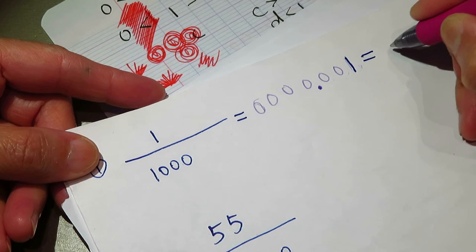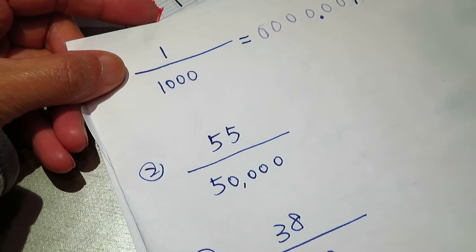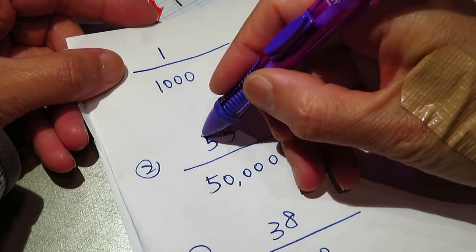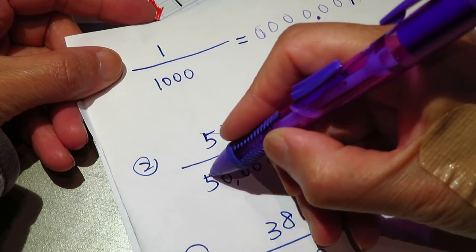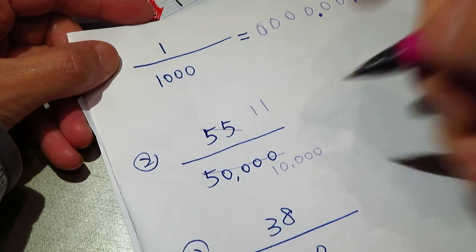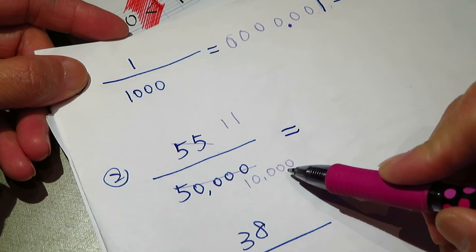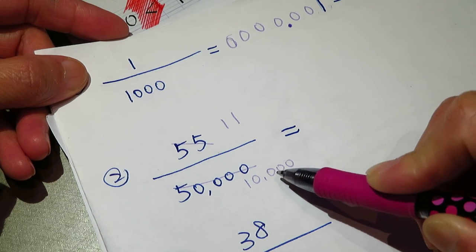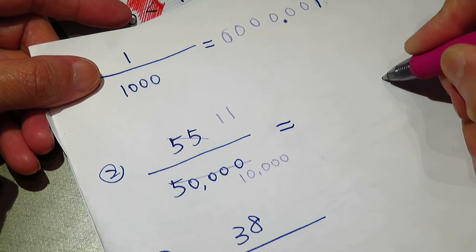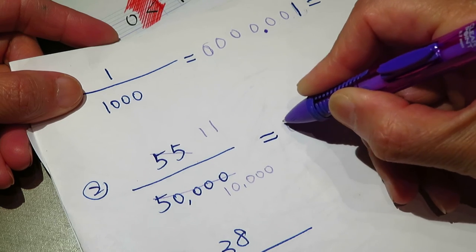This second one, on top and bottom we can divide by 5 to begin with. 11 divided by 10,000. 11 divided by 1 is still 11, and we need to move 1, 2, 3, 4 zeros, move the decimal point 4 places.